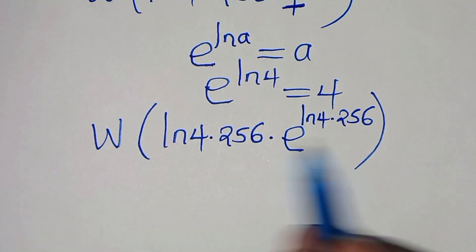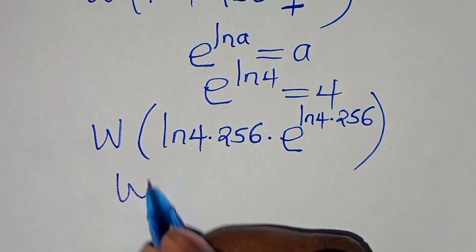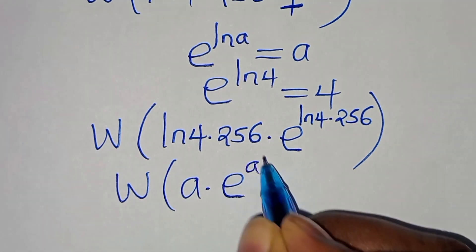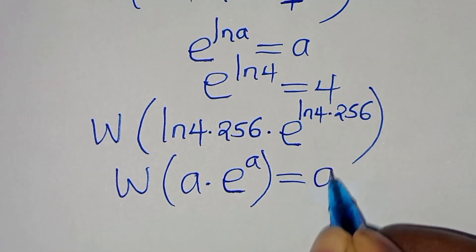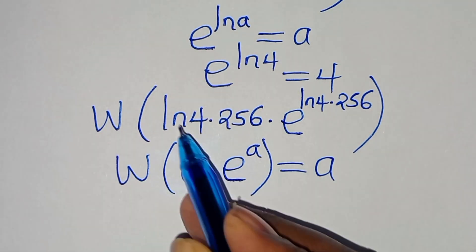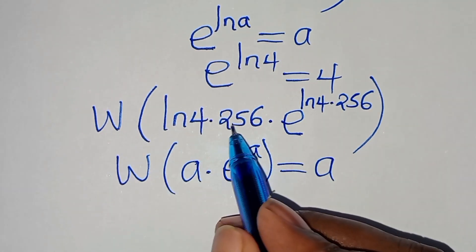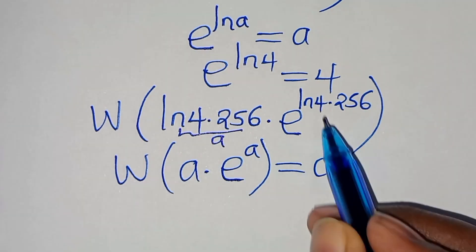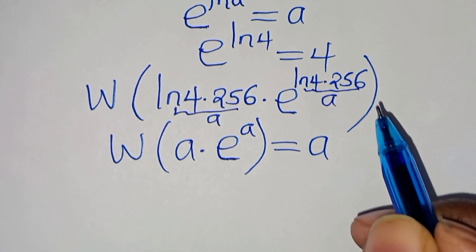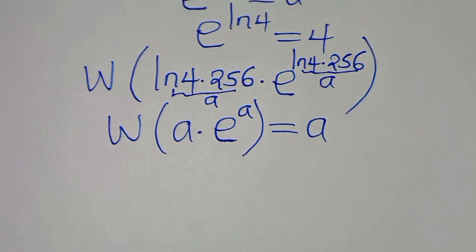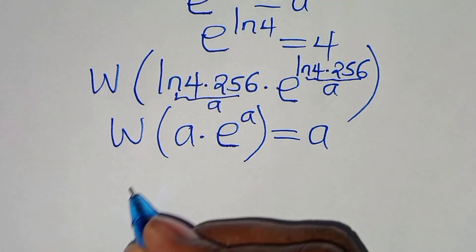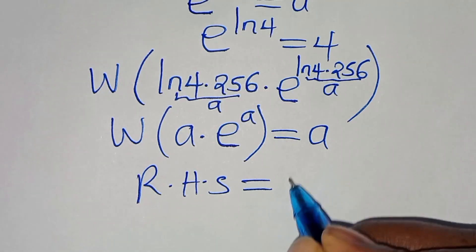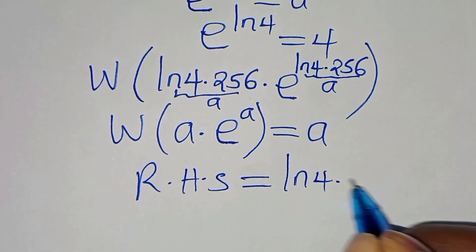From the Lambert W function property W(a times e to the power of a) equals a, applying this here: ln 4 times 256 is the value of a, so the W function resolves to ln 4 times 256 on the right-hand side.